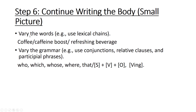Step six: continuing with the body — the small picture, getting down to the details. You need to vary the words that you use. For example, if you are writing about coffee, don't repeat the word 'coffee' so many times — you can use other words to refer back to it, for example 'caffeine boost' or 'refreshing beverage.' You also need to vary the grammar that you are using.